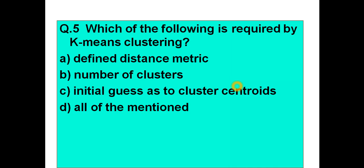The last question for this lecture is: which of the following is required by the k-means clustering algorithm? Option A: defined distance metric. Option B: number of clusters. Option C: initial guess as to cluster centroids. Option D: all of the mentioned. The correct answer is D — all of the mentioned. K-means requires a defined distance metric, the number of clusters, and an initial guess for cluster centroids. All these things are needed by the k-means clustering algorithm.